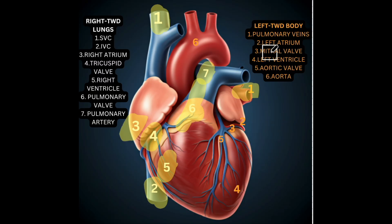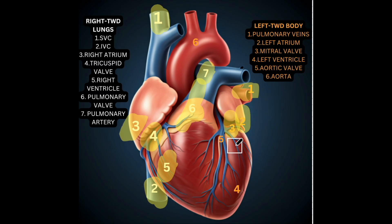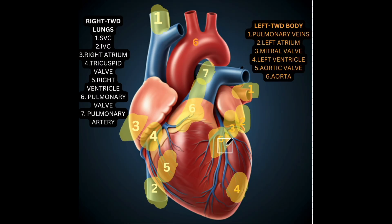That blood will flow into the left atrium, which is another chamber right here, through the mitral valve — which is the valve between the left atrium and the left ventricle — into the left ventricle, which is the larger chamber down here. That will push the blood up through the aortic valve right here, which is another valve to prevent backflow, into the aorta, where the blood will be pushed to the rest of the body.